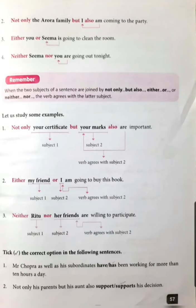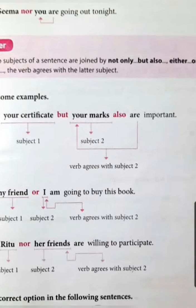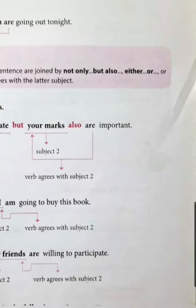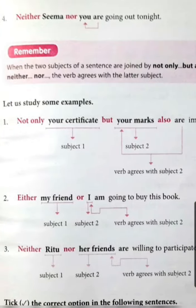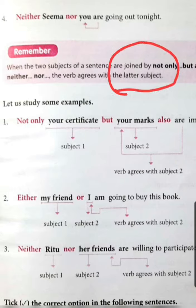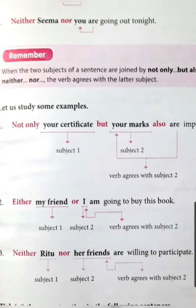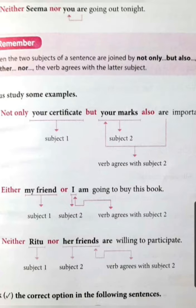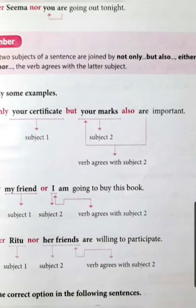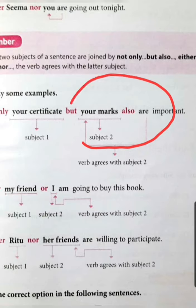Now look at the next rule. When the two subjects of a sentence are joined by 'not only...but also', 'either...or', or 'neither...nor', the verb agrees with the latter subject — meaning the second subject. Look at the first sentence: 'Not only your certificate but your marks also are important.' The second subject is 'marks', which is plural, so the verb is 'are'.